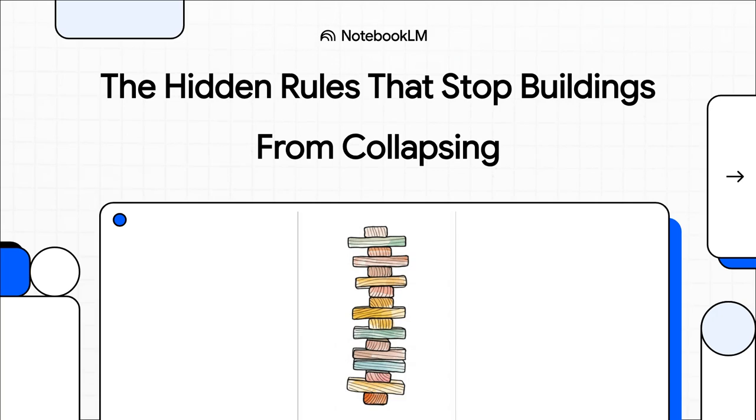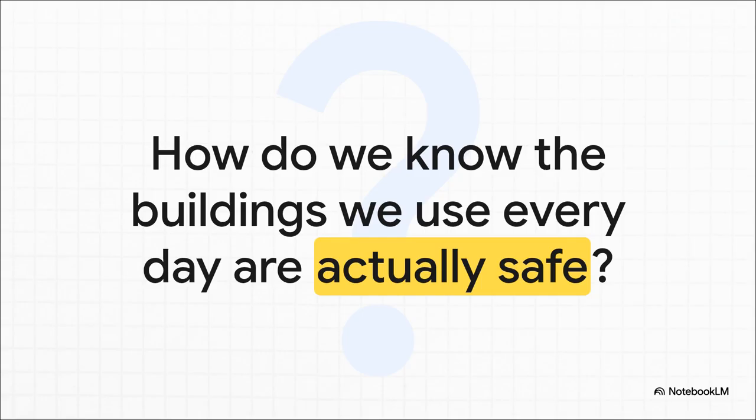All right, today on The Explainer, we're diving into something pretty amazing. The hidden rules, these brilliant solutions that engineers use to make sure the buildings all around us don't collapse. So let's just start with a question I think we've all asked ourselves at some point. How do we know that the buildings, bridges, and towers we use every single day are actually safe? I mean, really?